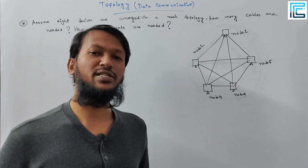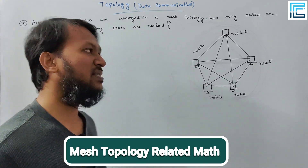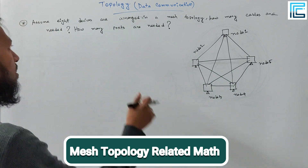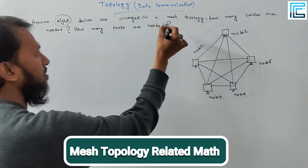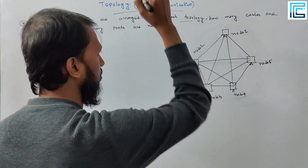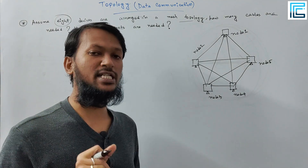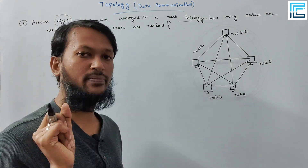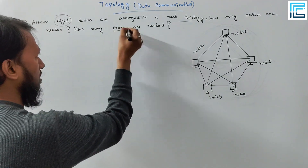Here is a problem example. We have to connect 8 devices in a mesh topology. How many cables are needed? And how many ports are needed for each device?